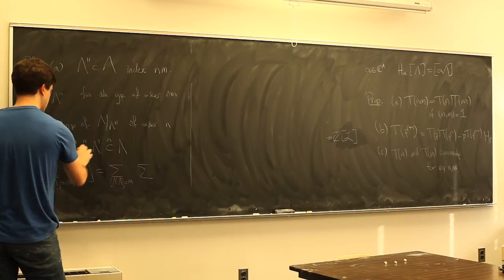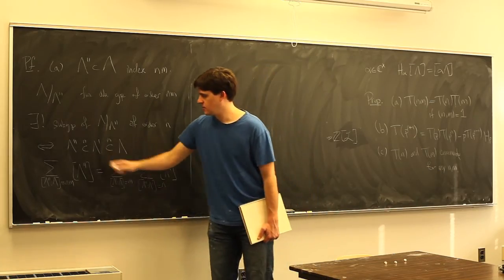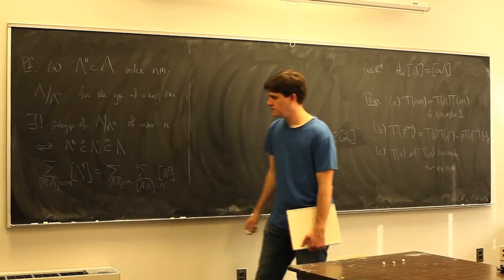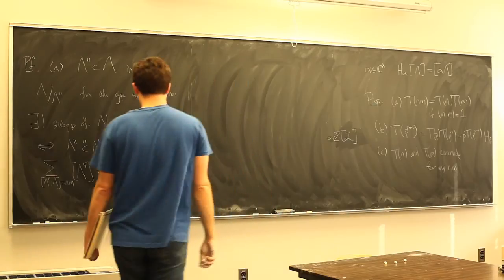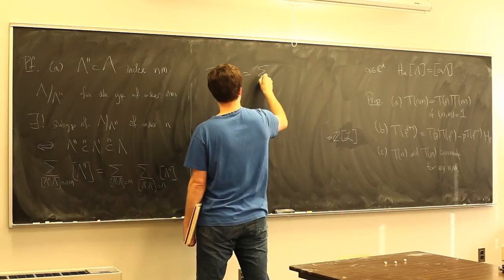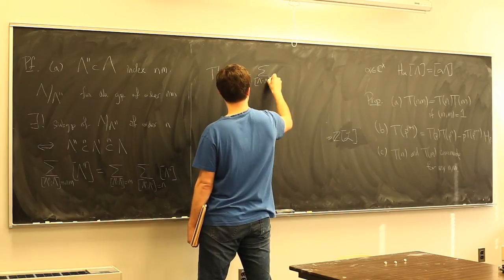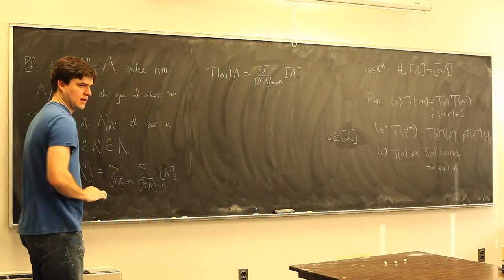I actually want to prove some of these facts. Let me prove part (a): if λ'' is a sublattice of Λ of index mn, then λ/λ'' is a finite group of order mn. By the Chinese Remainder Theorem, it decomposes uniquely into a group of order m times a group of order n, giving a unique λ' fitting between them with [λ:λ'] = m and [λ':λ''] = n.